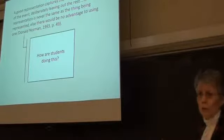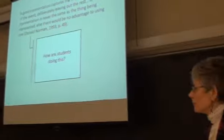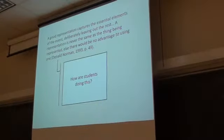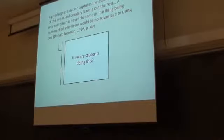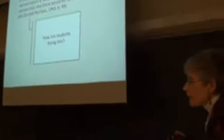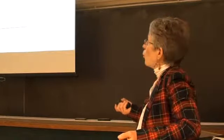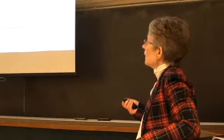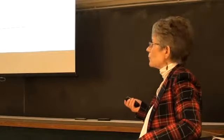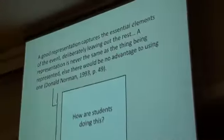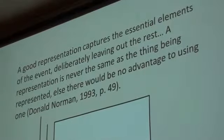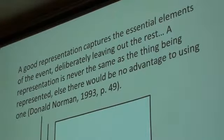If we look at the work of Donald Norman, who has worked on the theory of design, he talks about a good representation and how a good representation isn't the same as the thing that you're representing — otherwise, why would you need a representation? What a good representation does is to capture the essential elements of the event, deliberately leaving out the rest. So the question in terms of science learning and English learning in our classroom was: how are the students doing this, and what is the contribution of the curriculum to this — how visual communication is used?